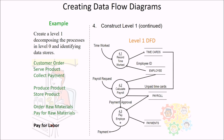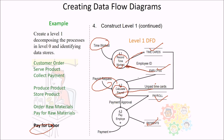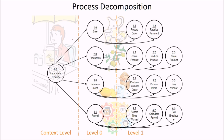Now pay for labor. This makes one more level 1 DFD — process 4.1. Time worked, time cards, employee, payroll, and payments are involved. Time cards and unpaid time cards go to calculate payroll. Record time worked goes to the time card data store, and employee ID is provided by the employee entity. This is time worked and this is the payroll request. This feeds employee data and paid time cards to produce the payment approval. The payroll gives approval and the payment — the employee is paid through payments.